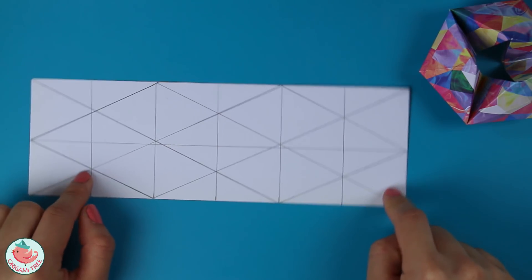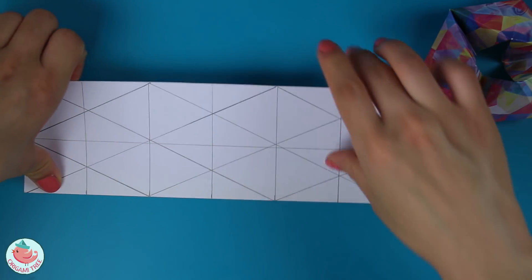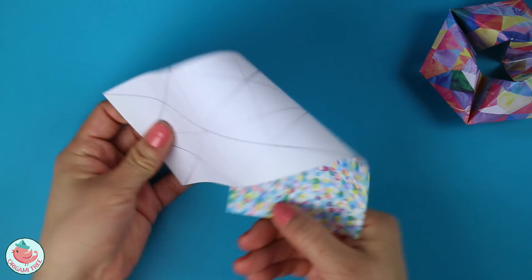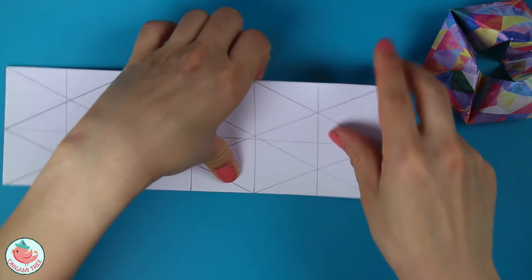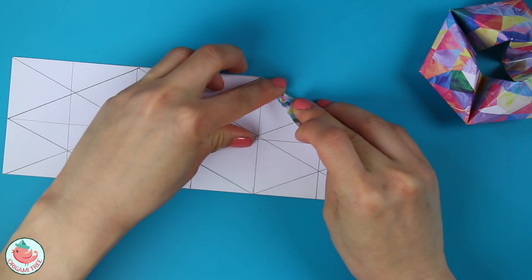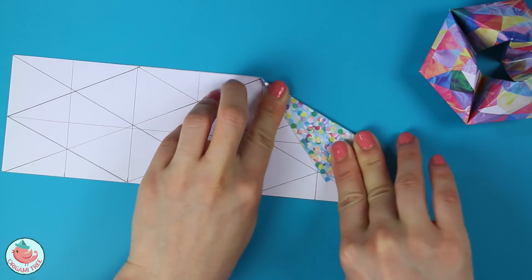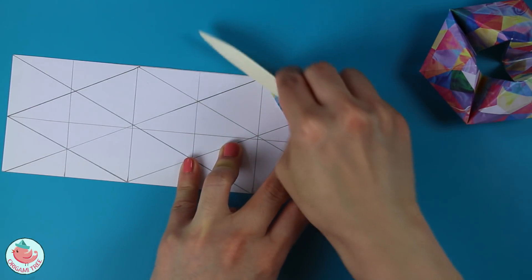So now we're going to work on some of the folds. And you always want to make valley folds. And what valley folds are, are ones that kind of fold towards you, as opposed to folding back. So the first one over here will be folded like this. And notice how I'm folding towards myself. And then you can take a bone folder and strengthen that crease a little bit.